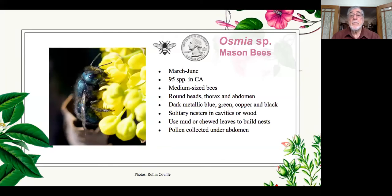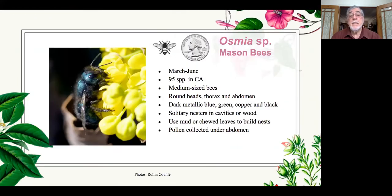Then we have the Osmia, which are the mason bees. These bees come out in springtime only. They have a round head, round thorax, and mostly a round abdomen, and they're beautiful dark metallic colors. They're solitary — some nest with mud, some with chewed up leaves — and they also collect pollen on the underside of their abdomen like leafcutter bees. Most of them are now passing, so we're getting ready for the summer bees.